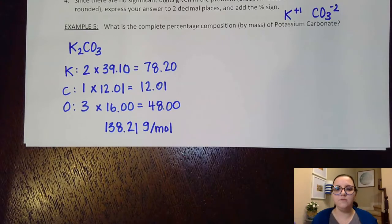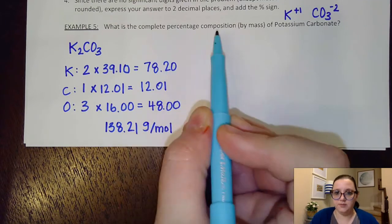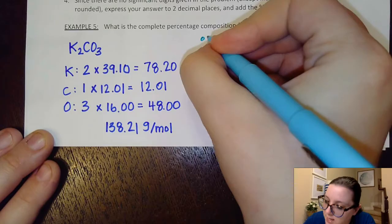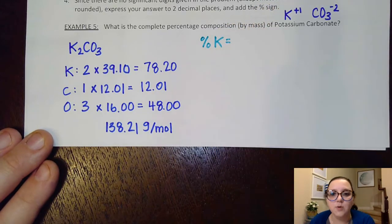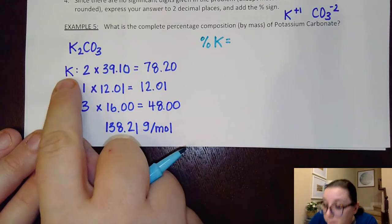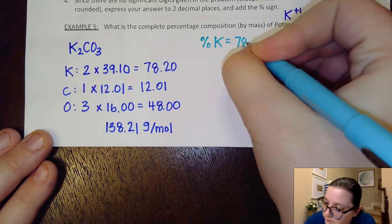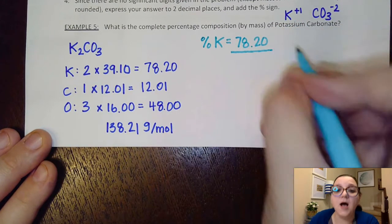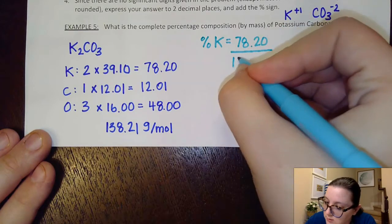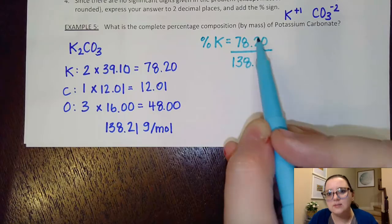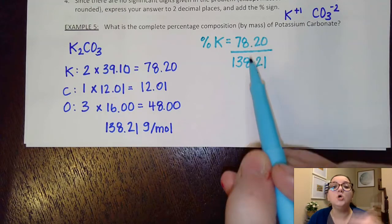All right, so now I have all of the pieces I need to calculate these percentages. So when I calculate a complete percent composition, what they're wanting us to do is to calculate the percentage of each individual element based off of our mass ratios. So if I'm doing the potassium, what I want to do is I want to put all of the total molar mass that came from potassium. So in this case, the 2 times 39.10, so that 78.20, over my overall molar mass, 138.21.